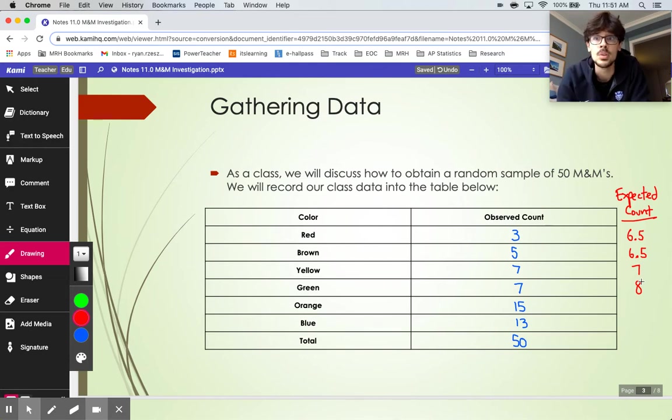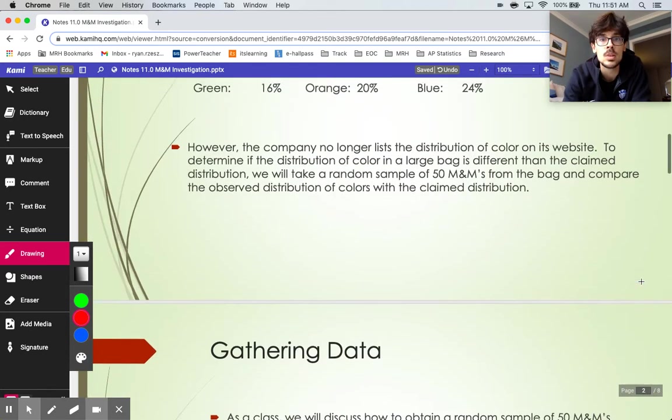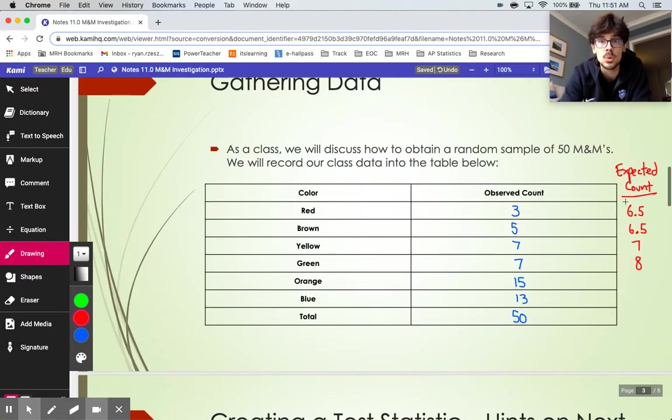And then with our last two here, orange was 20, blue was 24. So that's 10 and 12 we would expect to see. We had a lot more orange than we thought we were going to see. And we had a little bit more blue than we were expected to see. So those expected counts right there still add up to 50. That red list of numbers represents what we thought we should see.